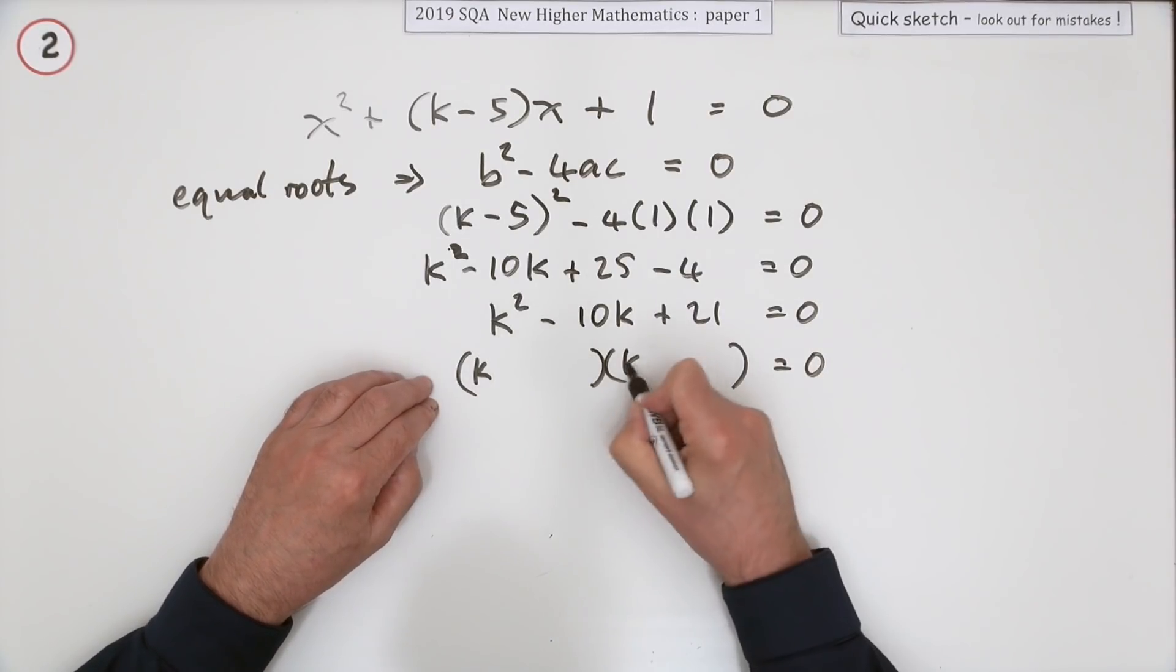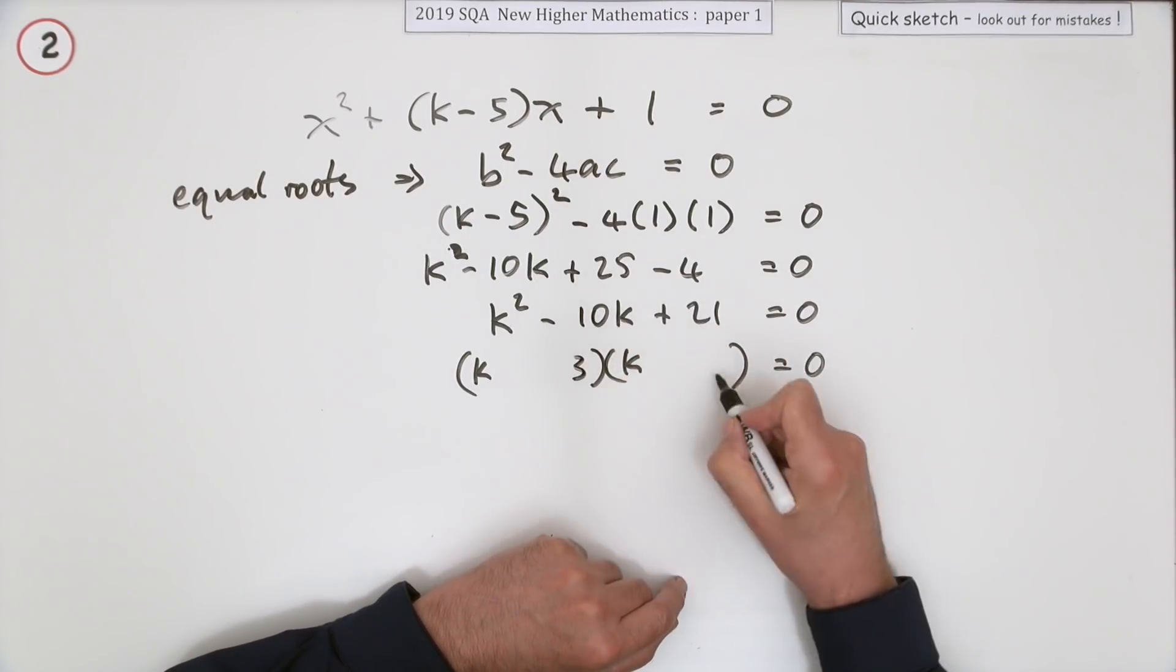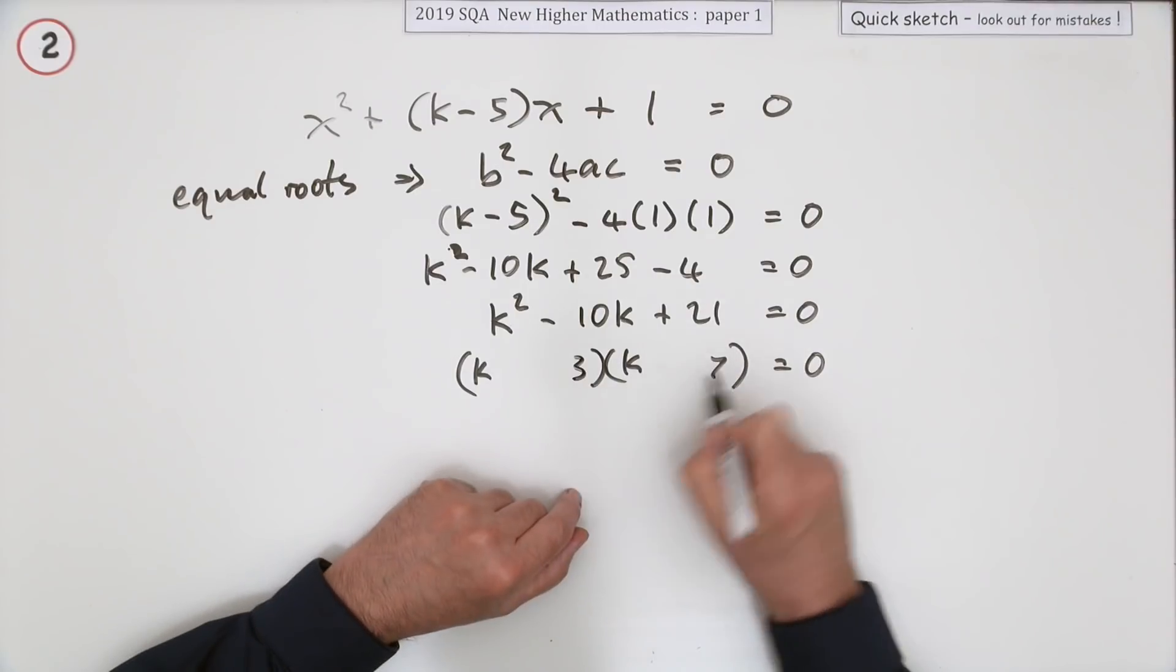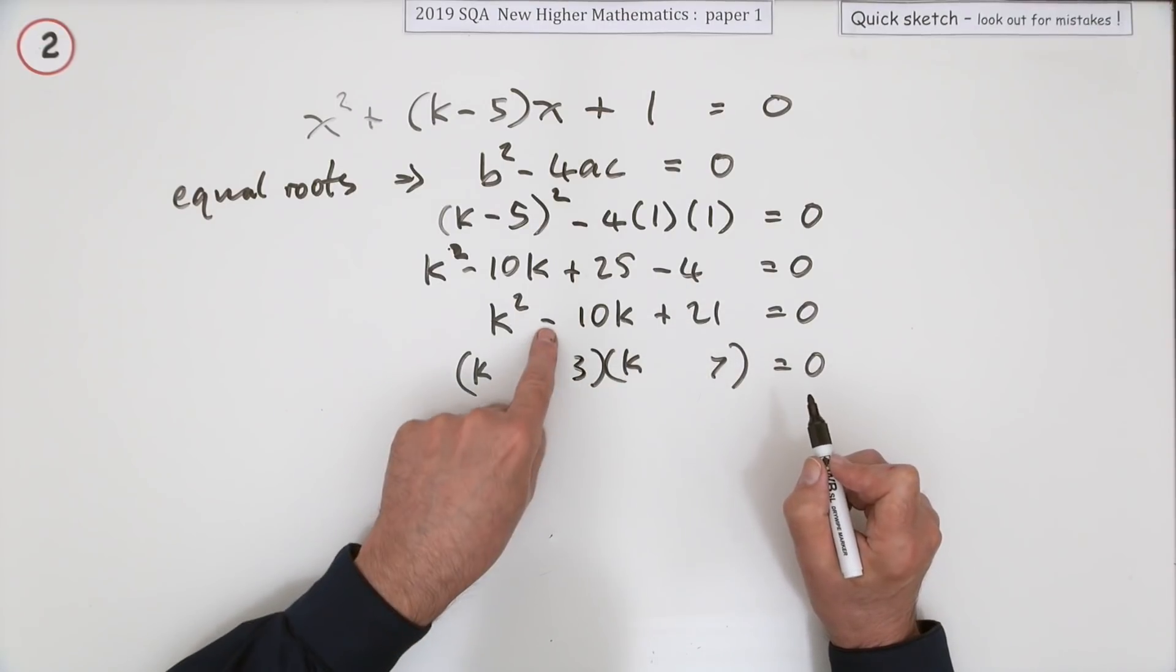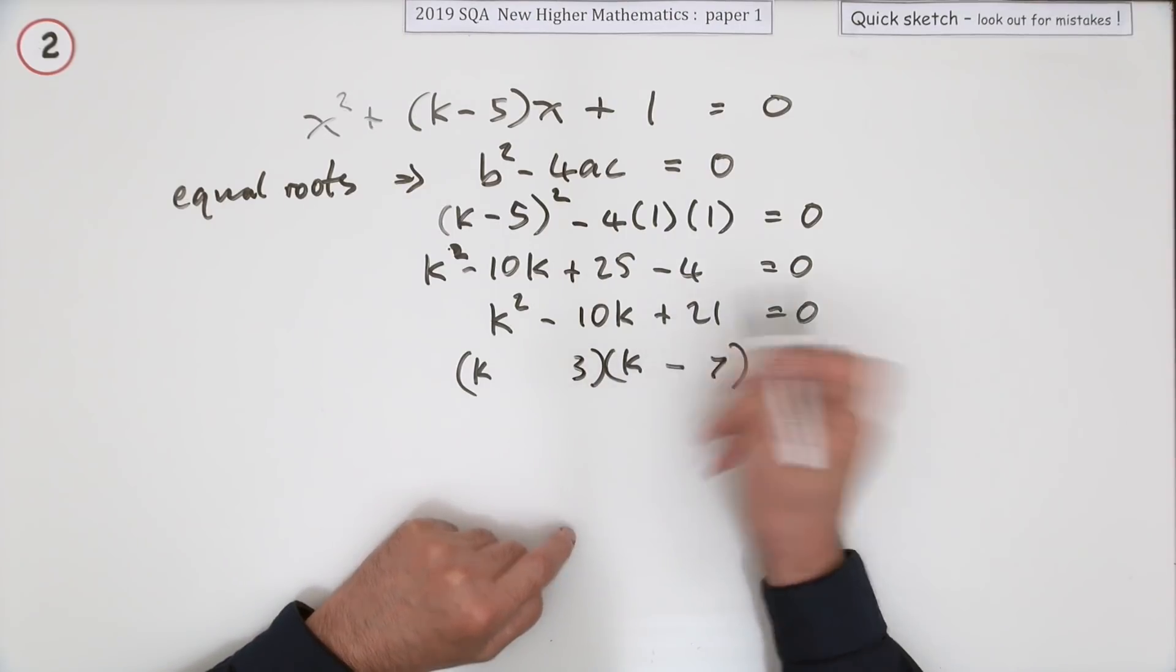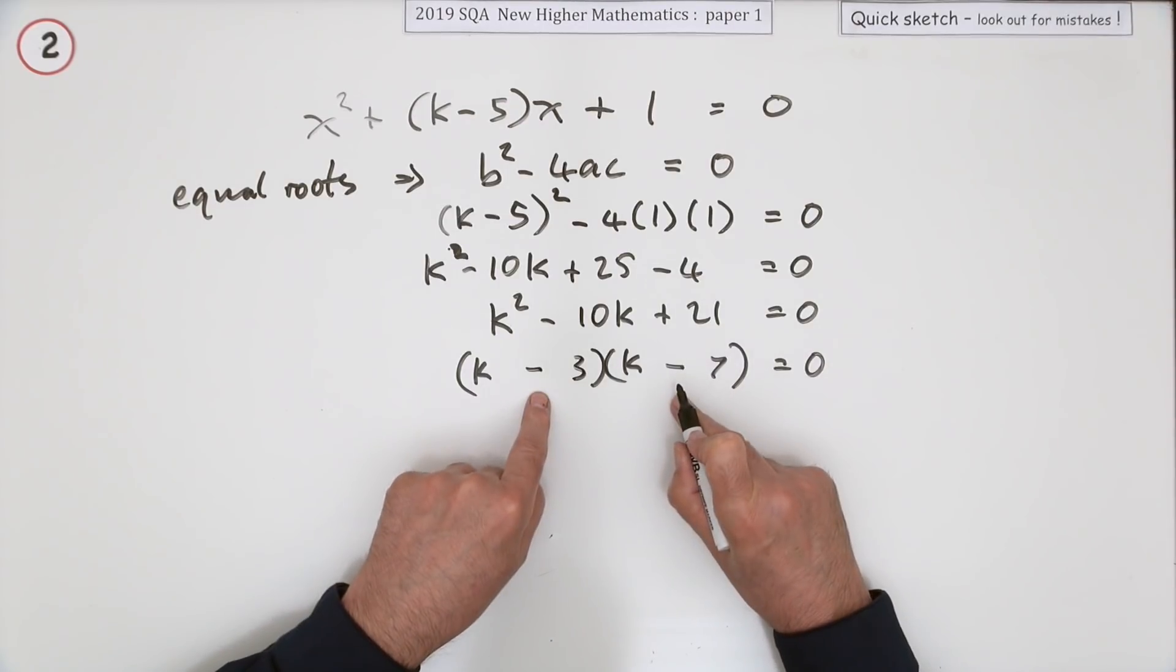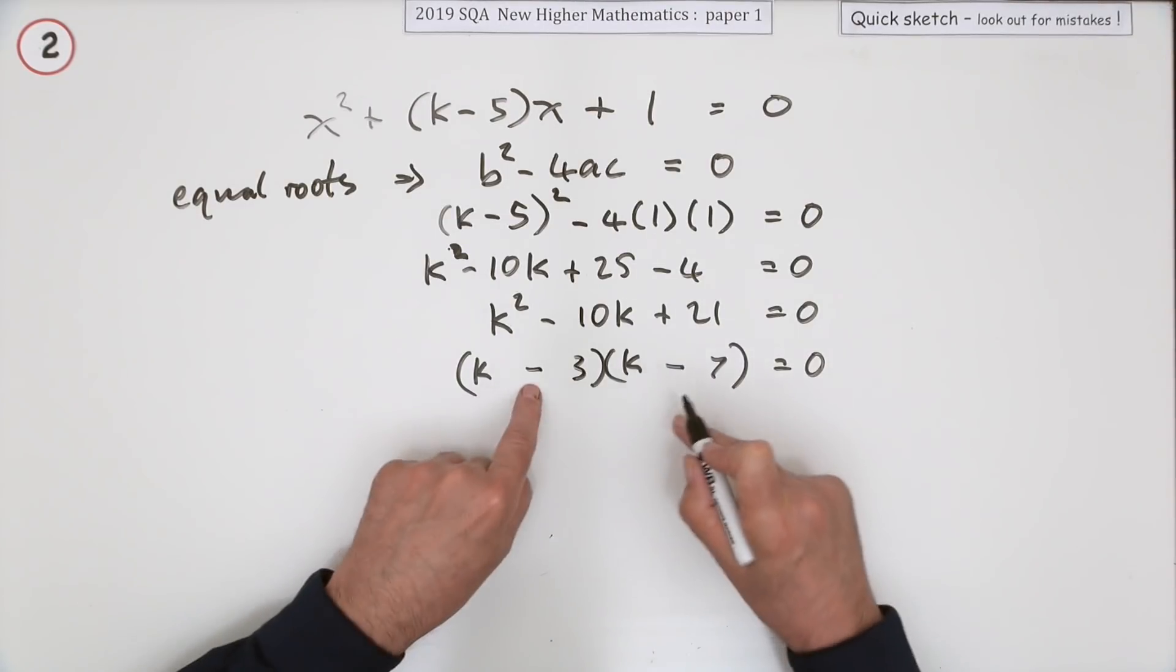Must be k times k. Multiply to give 21 and add to give 10. That's 7 and 3. 7 times 3 is 21, and 7 and 3 makes 10. The middle term is negative, so the larger product is negative. But that then says now they're both the same.